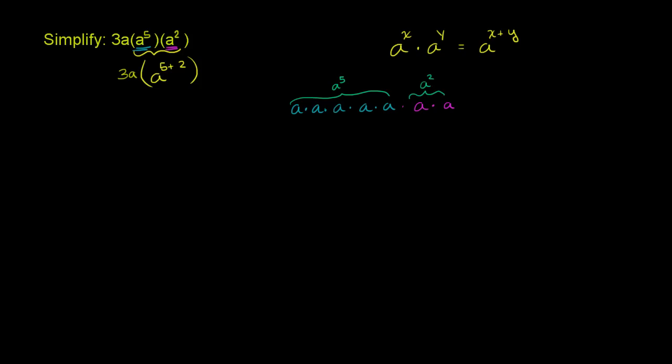When you multiply the two, you're multiplying a by itself seven times. Five plus two. So this is a to the seventh power, a to the five plus two power. So this simplifies to 3a times a to the seventh power.